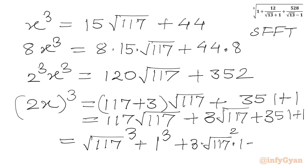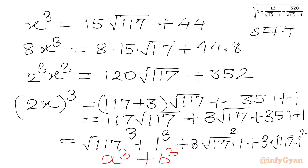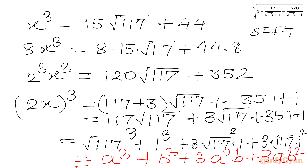The last term 1 I will write as 1 whole cubed, and square root 117 times 1 squared. This is replicating one algebraic formula: a cubed plus b cubed plus 3a squared b plus 3ab squared equals a plus b whole cubed. So I will write our RHS as square root 117 plus 1 whole cubed.